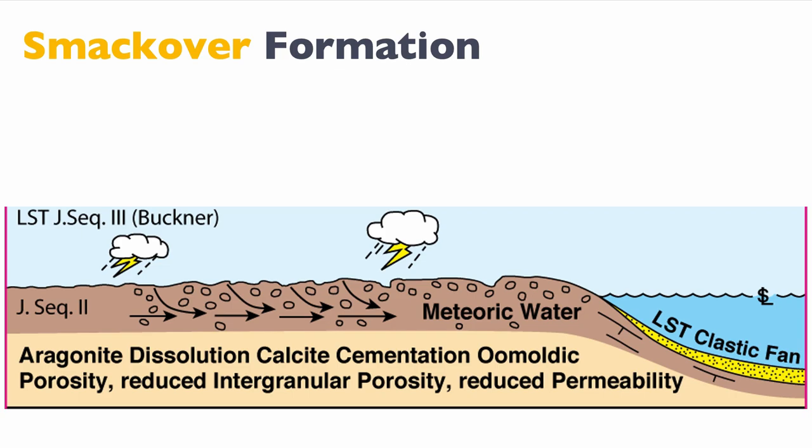We precipitate cement of calcite and we create an oomoldic porosity where the porosity is effectively inverted — the calcite is in the original intergranular porosity, and the molds of ooids, the oomolds, represent the new porosity. Because of the calcite cementation, the permeability of the rock is effectively reduced even if the intergranular porosity is replaced by oomoldic porosity. So not great for the reservoir at this stage. But this is not the end of the story — it's an important lesson that diagenetic processes can interplay with each other.